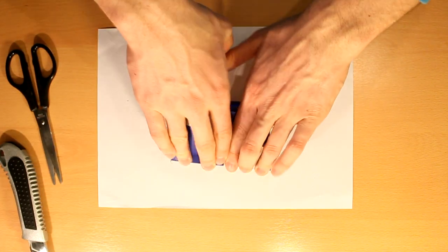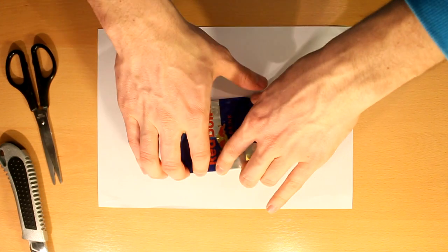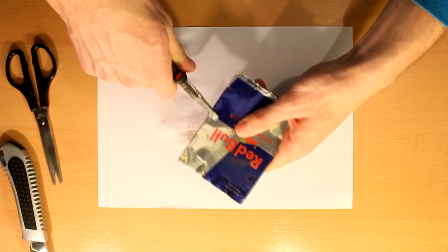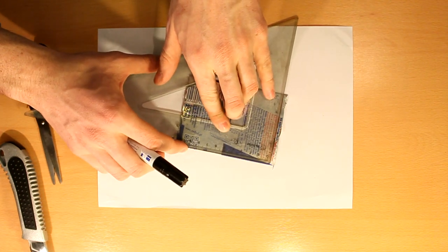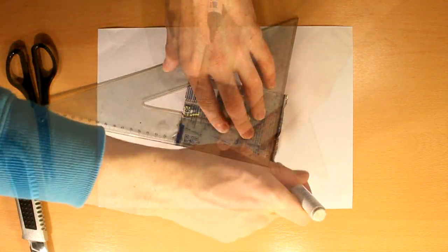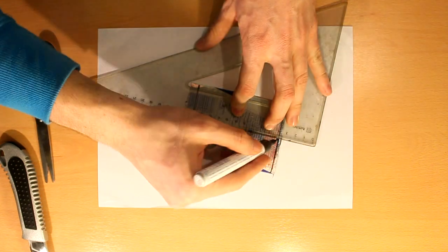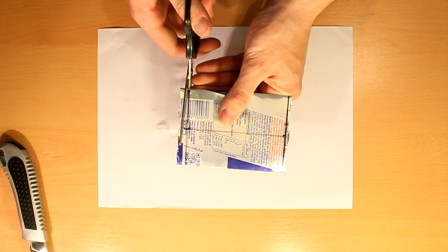You will now flatten the can. And also, using the pliers, you will crease the front. It's very important that you do this part well. Now mark 10 cm wide and make a line in the middle that will guide yourself. Cut the excess.